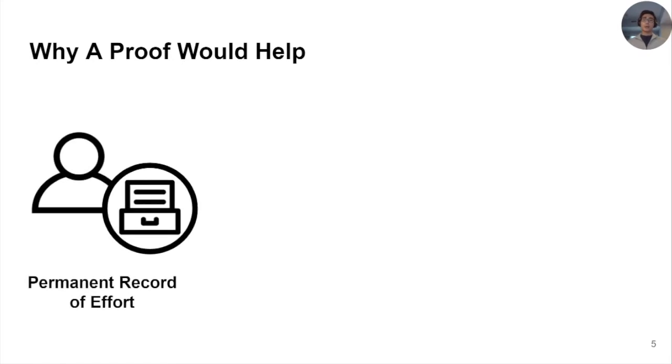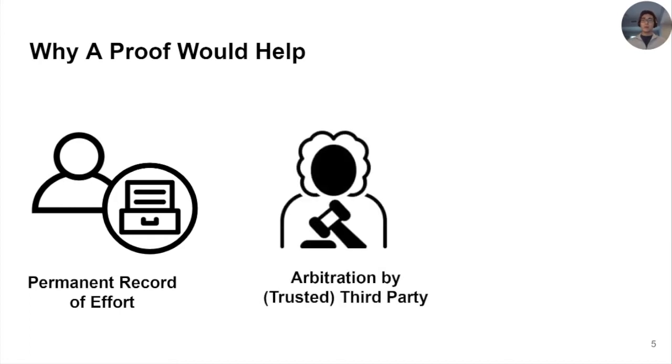As we will show, this is what our proof of learning provides. It is a permanent record of the entire training effort expended by the learner, not just the end result. It can be used in many ways, including aiding in temporal guarantees, like who learned a model or created the proof first. It is also naturally amenable to verification by an arbitrator, and is application agnostic. This means that a proof algorithm simultaneously tackles both ownership resolution and verified training computations.